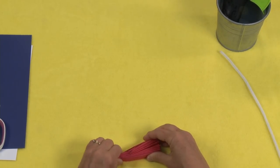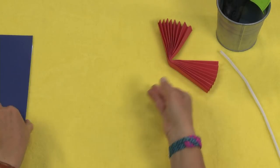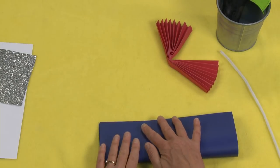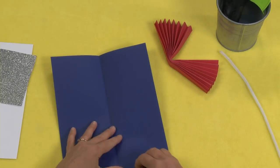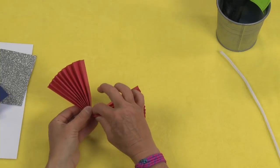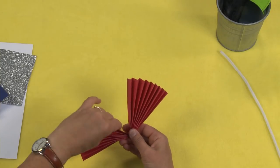Now if you want to, one of the things that you can do before you even start your fan folds is fold your paper in half this way, then measure, and then do your fan folds. That'll make sure that you have a nice crease right in the center there, but you don't have to do that.